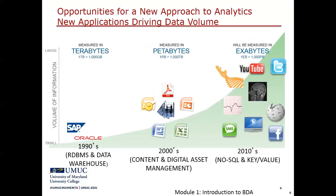Here is a short schematic. In the 1990s, we were able to handle most data with Oracle or SAP relational database management systems, and also Teradata, a data warehousing tool used to store several terabytes of data — about 1000 GB. Then in the 2000s, in addition to structured data, we also had images, textual documents, and other unstructured documents, and the size grew to more than 1000 terabytes, which is one petabyte.